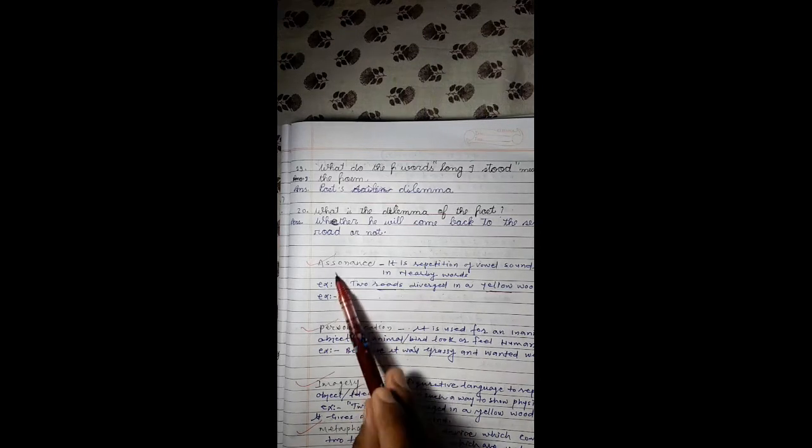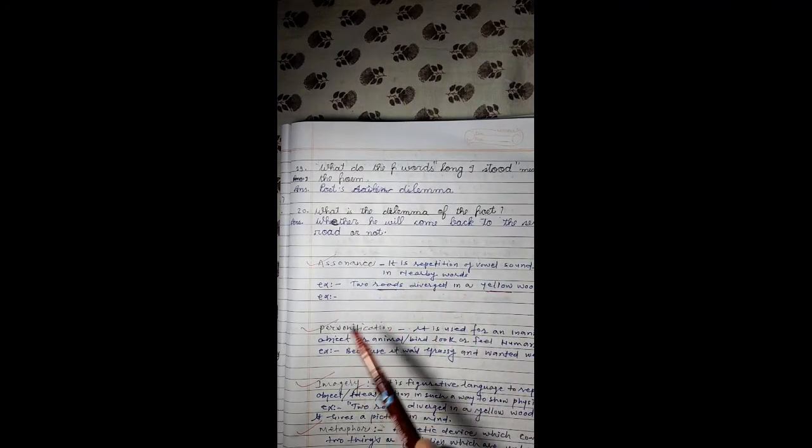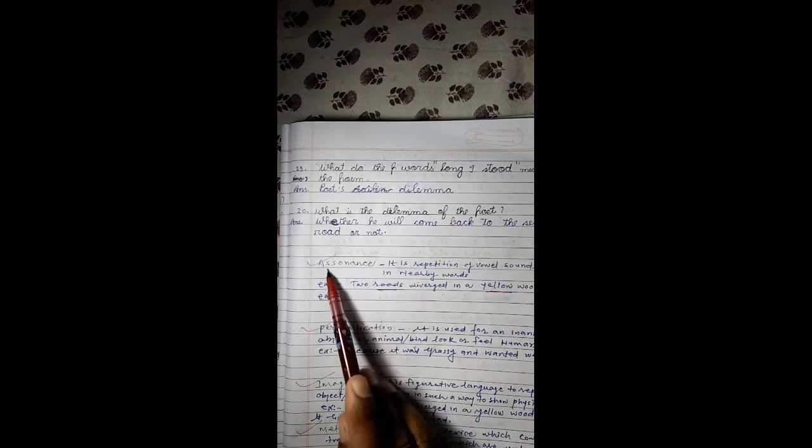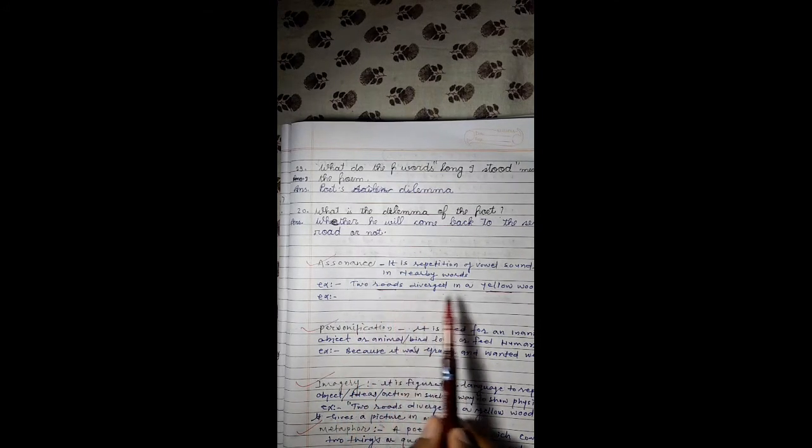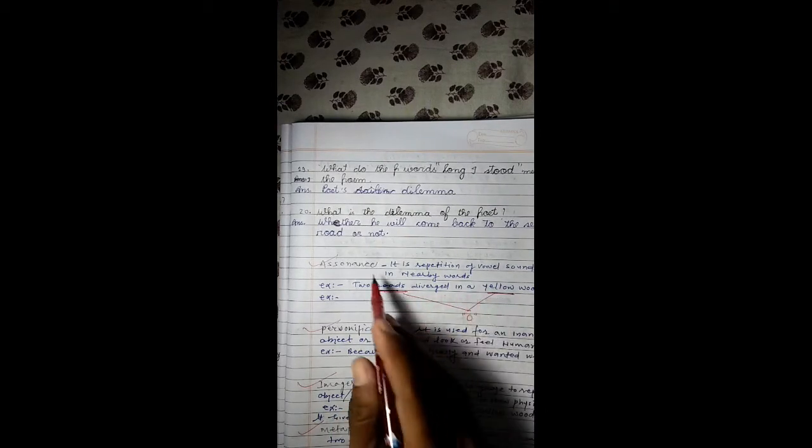Friends, in this poem there are some poetic devices which are important. The first one is assonance. It is the repetition of vowel sounds in nearby words. In any stanza's line, if the close words have the same vowel sounds, then the poetic device is assonance. For example, in the line 'two roads diverged in a yellow wood,' roads and yellow both have the 'o' sound, so this line has assonance.